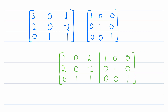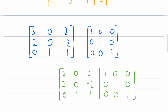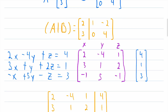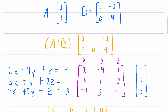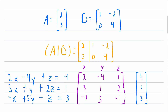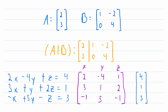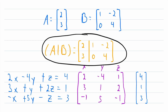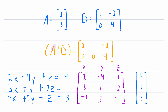So that's just a little bit about augmented matrices and why they are useful. Remember that an augmented matrix is created by joining the columns of two matrices. The notation for that looks like this: if you're joining two matrices called A and B, you would write A, then a vertical line, and then B.